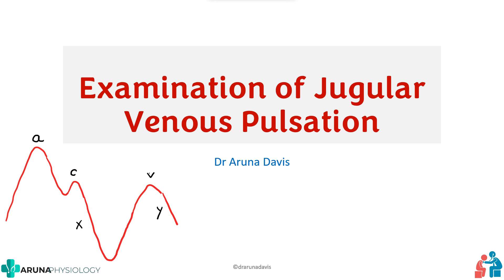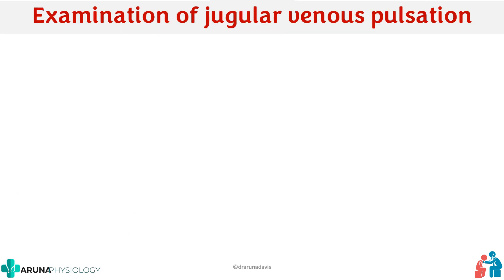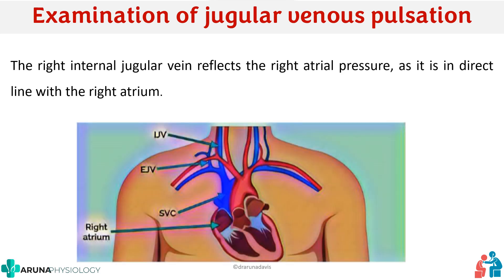In this video we are going to see about examination of JVP or jugular venous pulsations. The right atrium is in direct contact with the internal jugular vein, and because there are no valves in the internal jugular vein, right atrial pressure is accurately reflected onto it. The right internal jugular vein reflects right atrial pressure as it is in direct line with the right atrium.